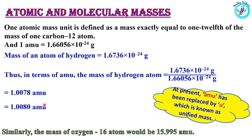The mass of oxygen is 16, and the atomic mass in amu will be 15.995 amu.